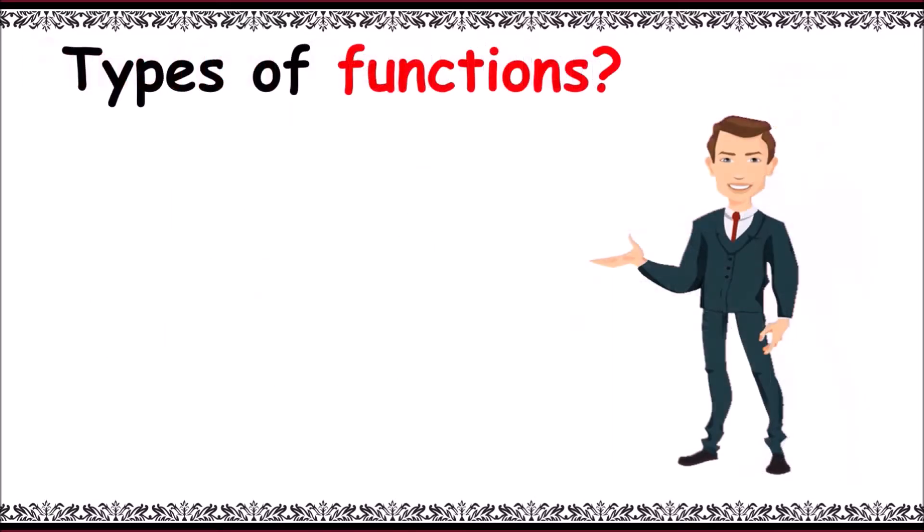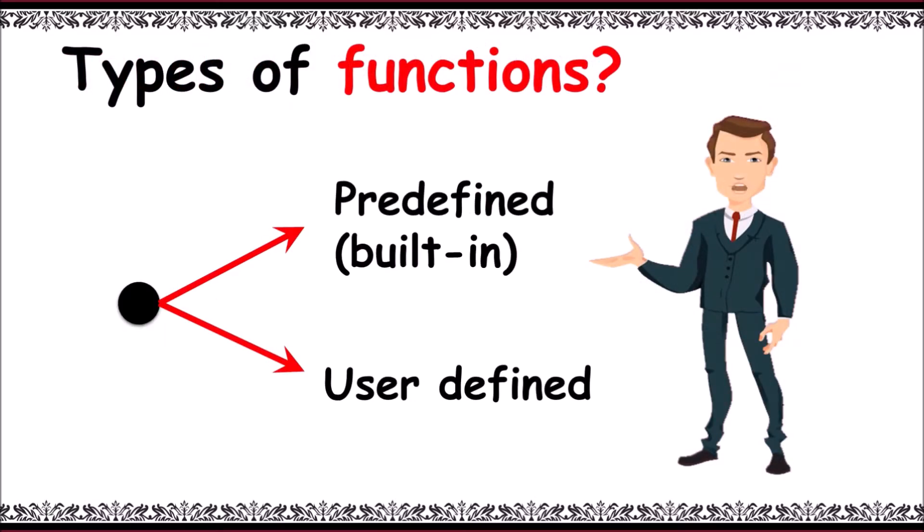There are two types of functions in C: predefined function, also called built-in function or standard library function, and user-defined function.